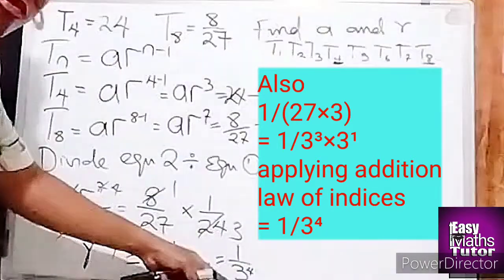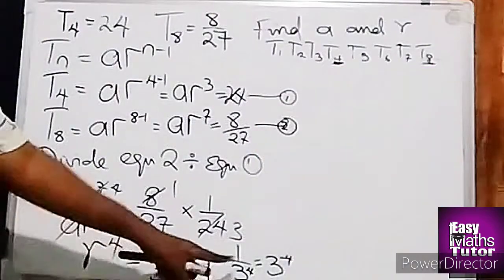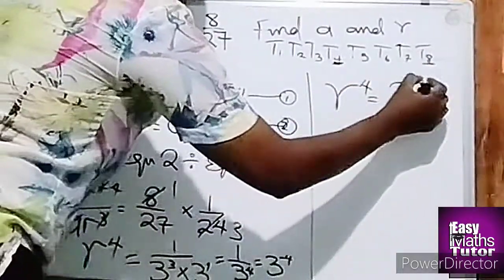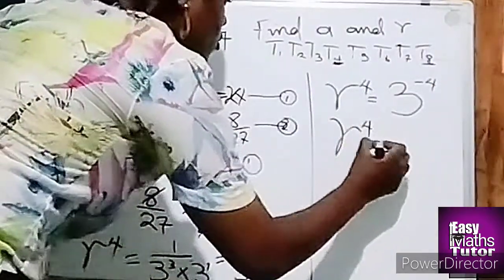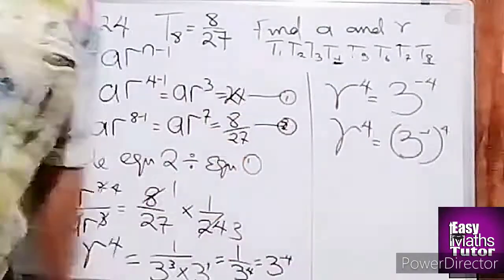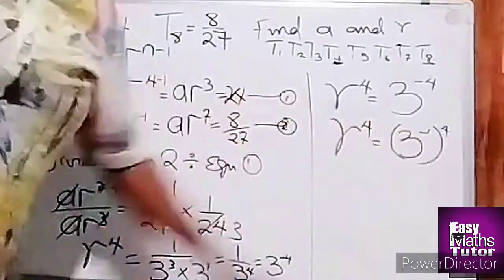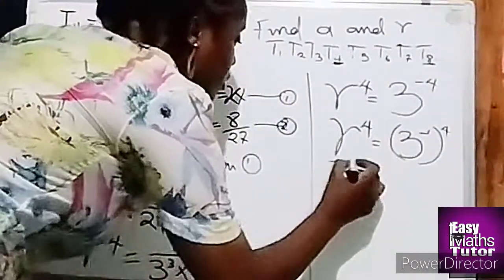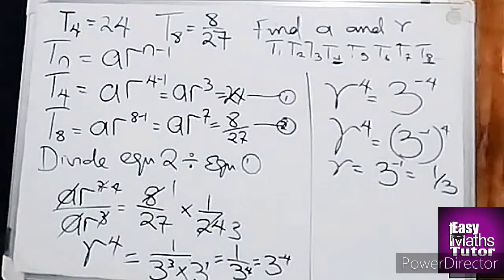So if I shift this 3⁴ up, I would have 3^(-4). Now we have a relationship. We'll have r⁴ equal to 3^(-4). I'm trying to make the powers to be exactly the same, and I employ the multiplication law of indices, which made -1 times 4, the same thing as -4. So therefore, we have a value for r. Our r is equal to 3^(-1) or 1 over 3.